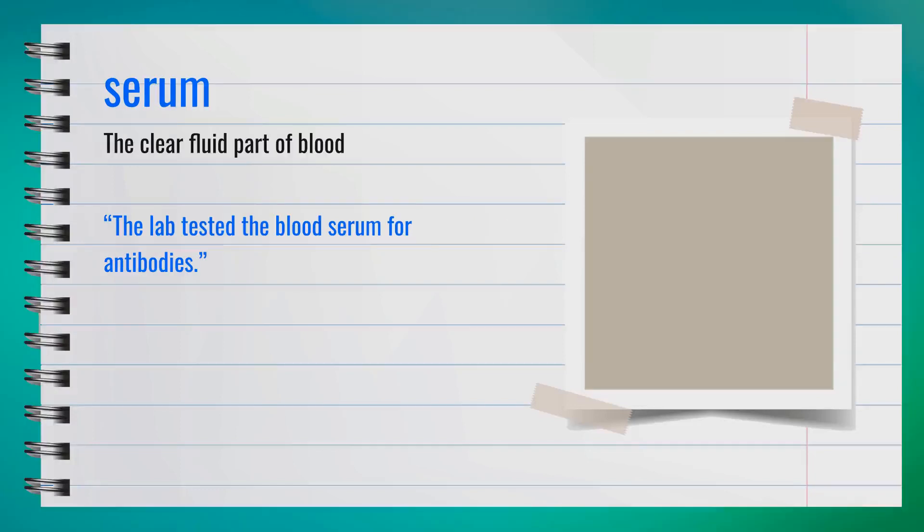The word serum, spelled S-E-R-U-M, is a noun pronounced 'serum.' Serum is the clear fluid part of blood. Synonyms include plasma or fluid. For example, the lab tested the blood serum for antibodies. In summary, serum is the clear fluid part of blood.